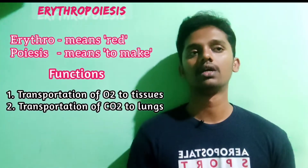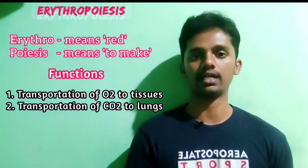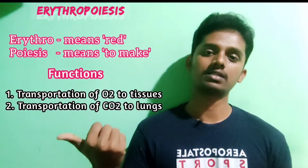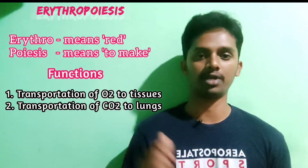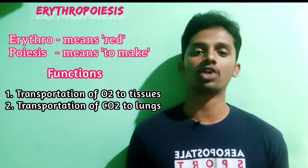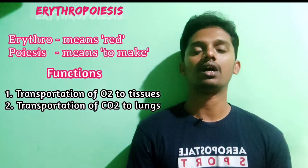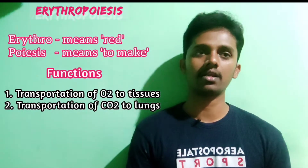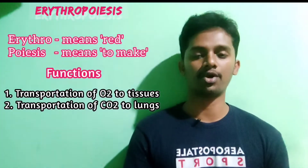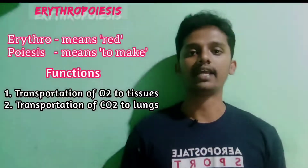When you take in oxygen, the carbon dioxide is released. The oxygen enters the lungs, and carbon dioxide is eliminated through the lungs. The vital cells responsible for this are the red blood cells, and the process of forming them is called erythropoiesis.